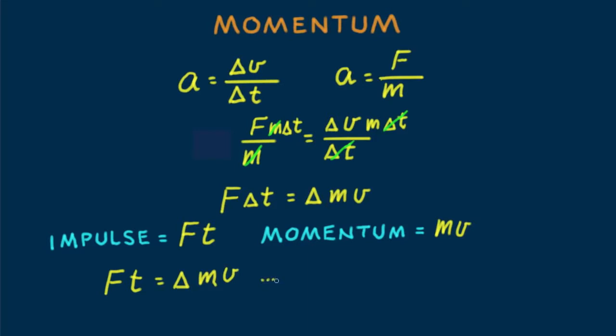Impulse equals change in momentum. In symbol form, ft equals delta mv. We say the impulse exerted on an object changes the momentum of the object. ft equals delta mv is called the impulse-momentum relationship. Both impulse and momentum are vector quantities — direction matters.